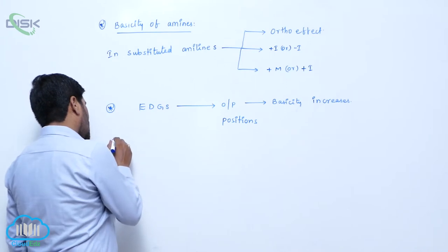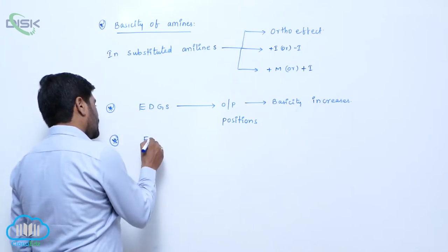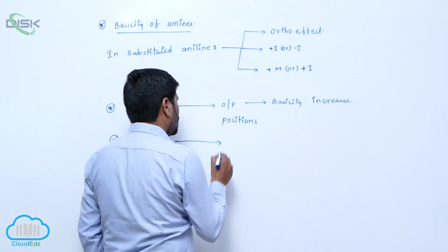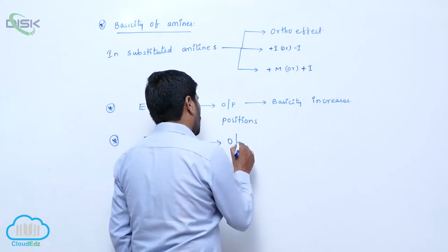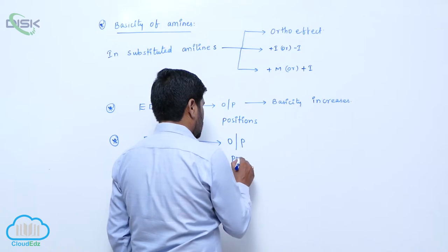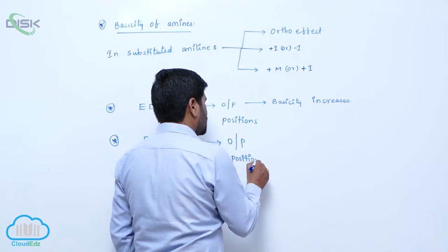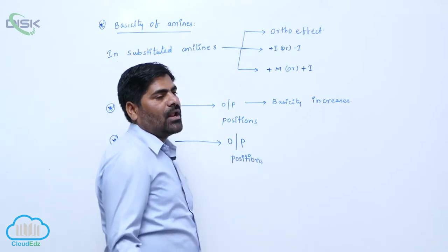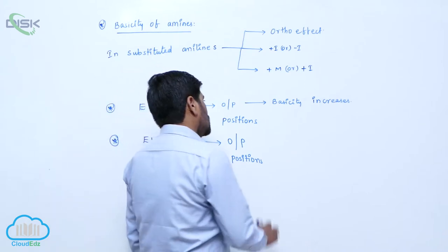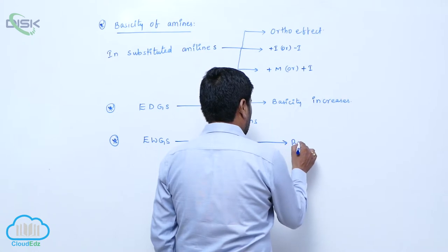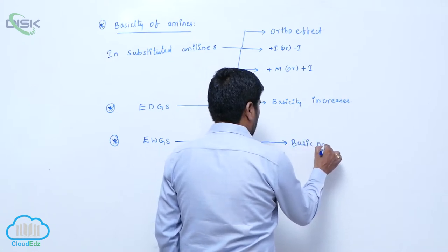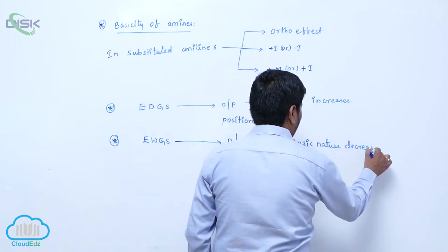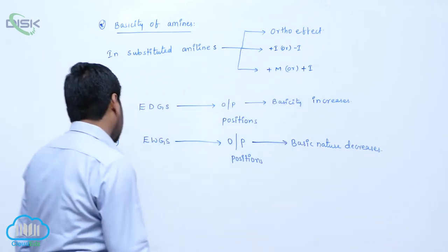Now, electron-withdrawing groups present at ortho or para positions increase the electron-withdrawing capacity. So the nitrogen lone pair of electrons becomes involved in delocalization, and therefore the basic nature decreases.